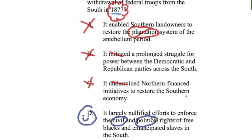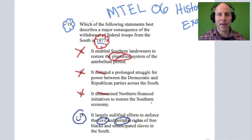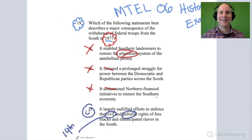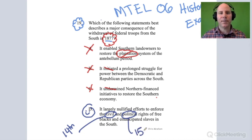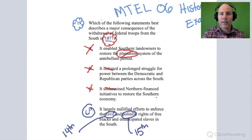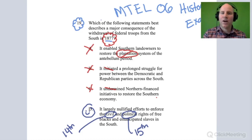I'm going to circle the words 'civil and political rights.' Without the troops, it largely nullified the progress made under the 14th Amendment — which protected citizenship rights and due process under the law — and the 15th Amendment that prevented discrimination in the voting booth. So when you read this question, understand why A, B, and C are wrong, and also understand what's going on in D.